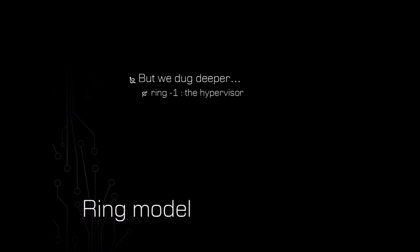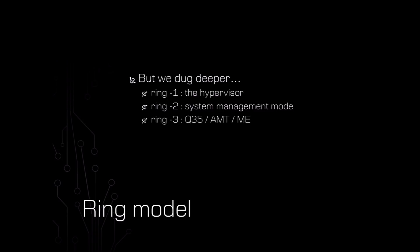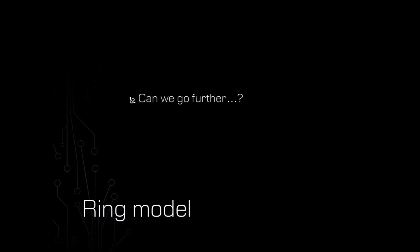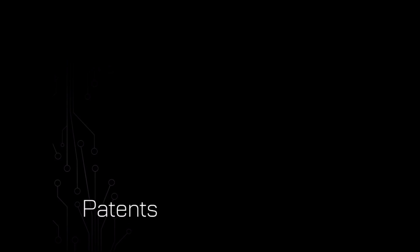But we started digging deeper. This ring model wasn't well suited for running multiple operating systems on one processor — we needed something more privileged than ring zero to handle that. So we invented the hypervisor. Since it was more privileged than ring zero, colloquially we called that ring minus one. But there are some things we didn't want the hypervisor to do — we threw all those things into system management mode. Since that was more privileged than the hypervisor, we called that ring minus two. Then a couple of years ago, some researchers came along and said there's this entirely different processor sitting on the platform that can do things the x86 processor can't do. So we started calling that ring minus three. It's just getting ridiculous at this point. But if you've been following this research as it's expanded over the last 20 years, in the back of your head you've probably been thinking: can we go further? How deep does this rabbit hole go? That's the question I set out to answer.